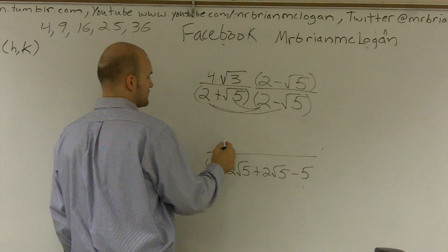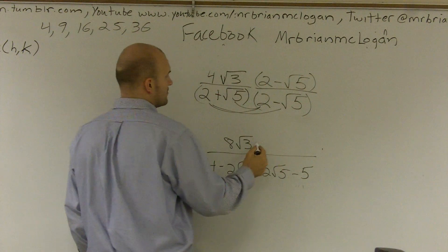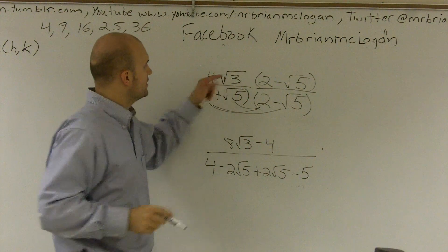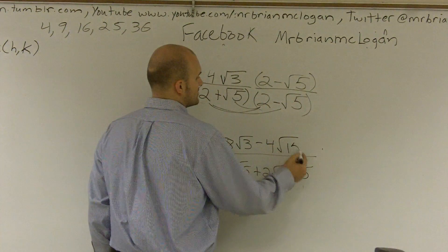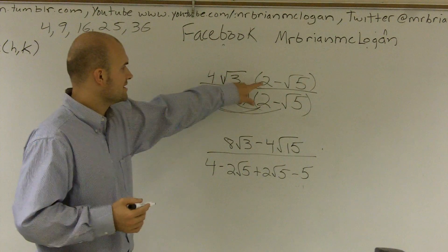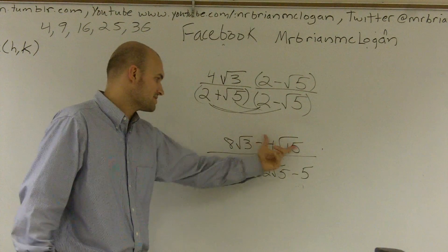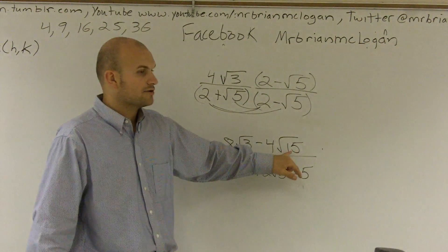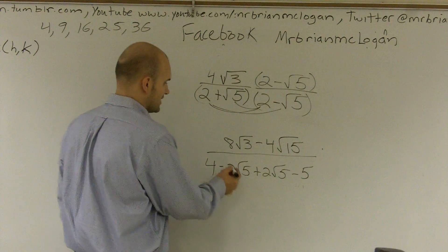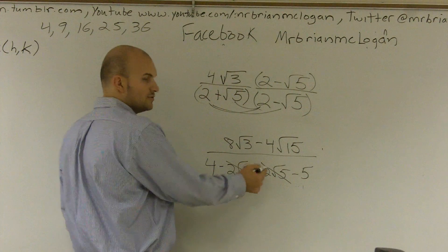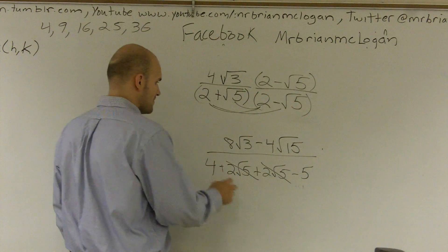Now for the top: 4 times the square root of 3, times 2, gives 8 times the square root of 3, and then minus 4. When multiplying 4 radical 3 times a radical, you multiply the numbers inside the radical but the 4 stays outside, giving 4 times the square root of 15. I can't combine 8 root 3 and 4 root 15 — they don't have the same terms and root 15 doesn't simplify further. On the bottom, 4 minus negative 5 leaves 9.